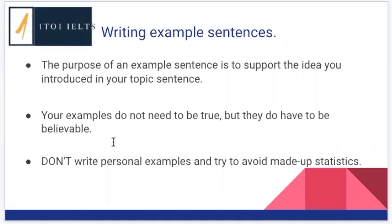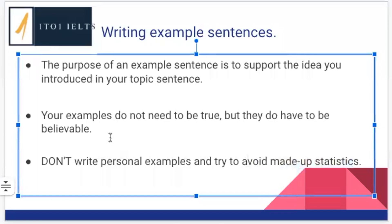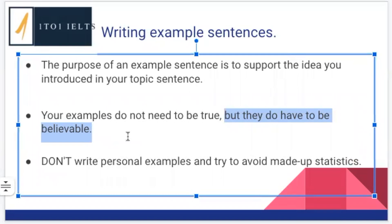Examples do not need to be true but they do have to be believable. Avoid writing personal examples and avoid made-up statistics. You won't lose marks for using statistics but they need to be believable — if you're just coming up with statistics out of thin air, it's generally not believable. If your examples are not believable, they do not support your ideas. If you have some statistics and you happen to know them, great, use those. If not, use more general expressions — rather than saying 90%, you could say 'a large percent' or 'a majority' to avoid specific statistics.